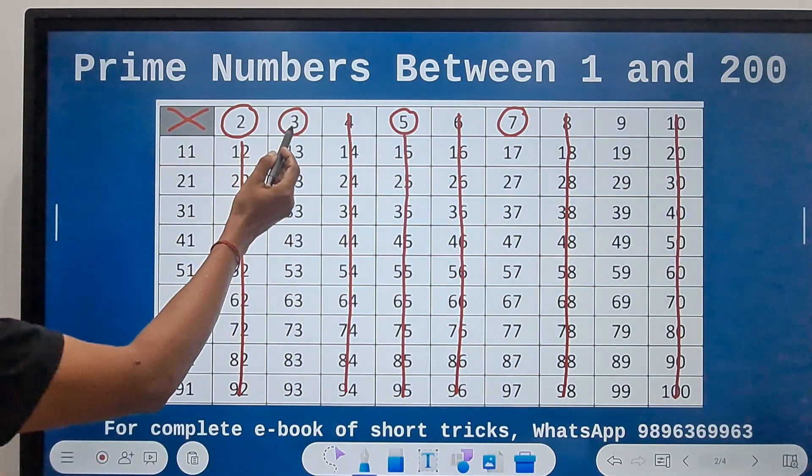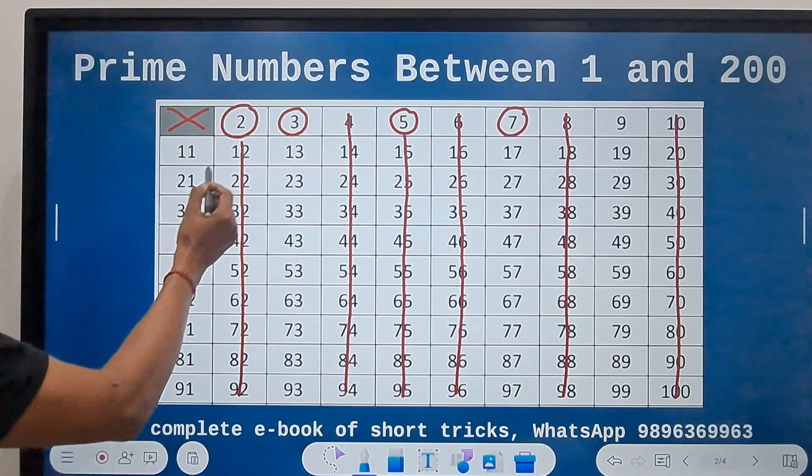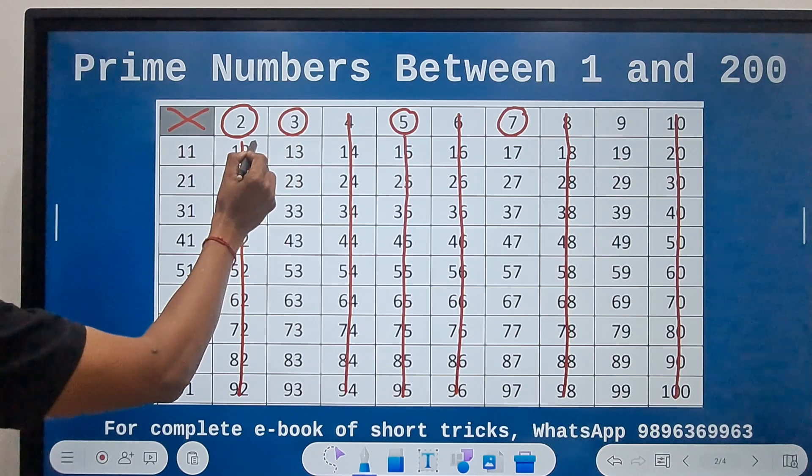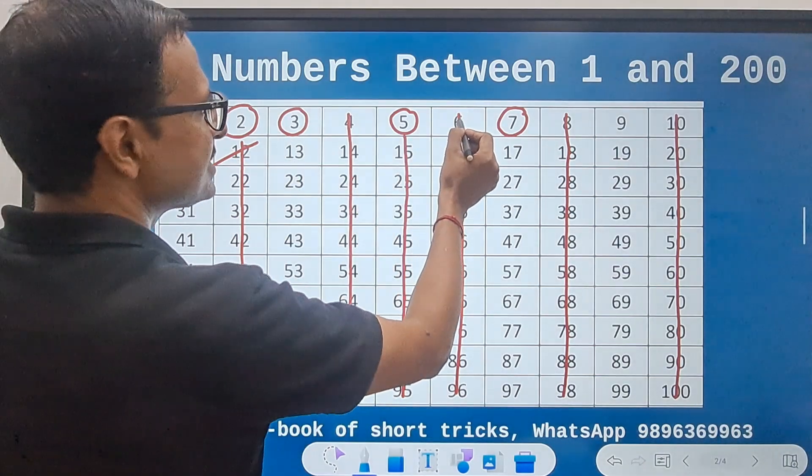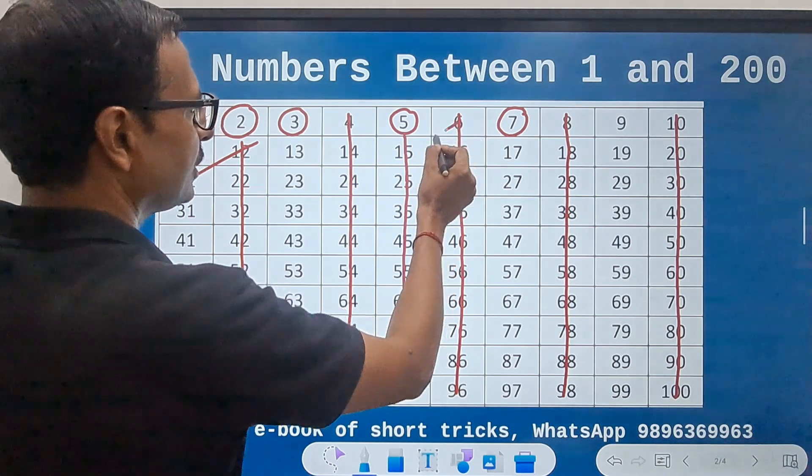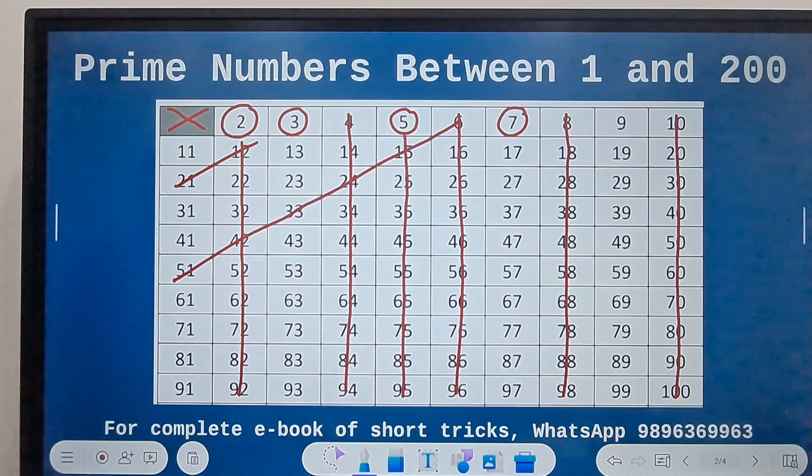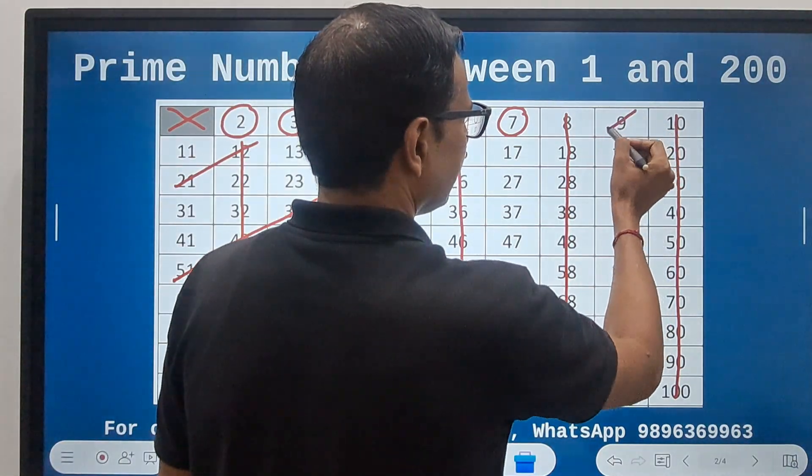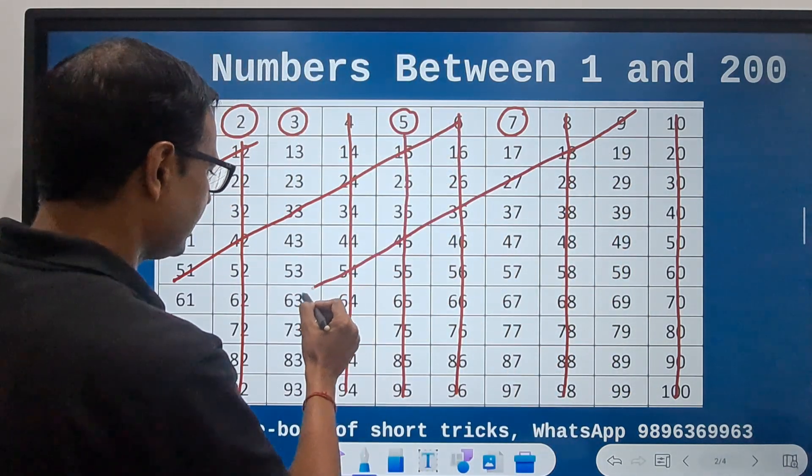So if you see 3, the diagonal elements are all divisible by 3, right? So let's rule out 6, rule out this entire diagonal, and then you have 9 which is not prime. Rule out everything that lies along this diagonal.